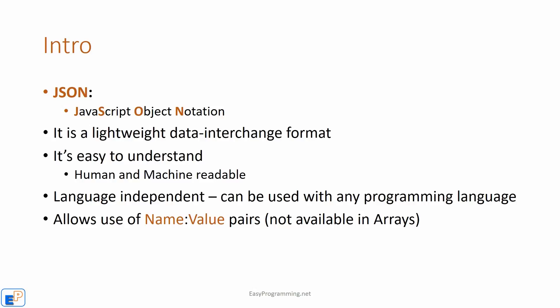JSON is also language independent, which means it can be used with any programming language, whether you're using PHP, Java, or just plain old JavaScript. JSON also allows you to use name-value pairs, which is not available in arrays — something I've mentioned in the past. So you can have an associated array feel in JavaScript by using JSON.